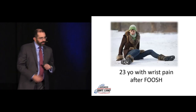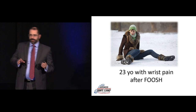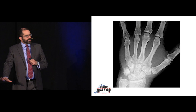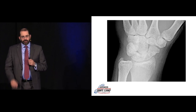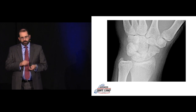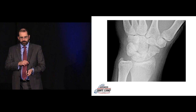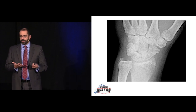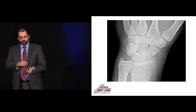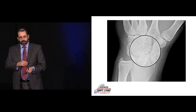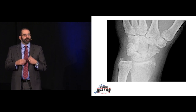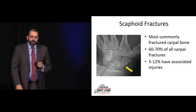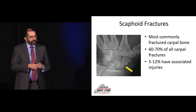Classic FOOSH injury: a person comes in with pain after a fall on an outstretched hand. Not much on the AP view, but on the oblique view there's a subtle lucency through the scaphoid. The question is: is that a mock line from overlapping bone, or a true fracture? As we trace it, it stops right at the edge of the scaphoid on both sides, making this much more likely to be a true scaphoid fracture.